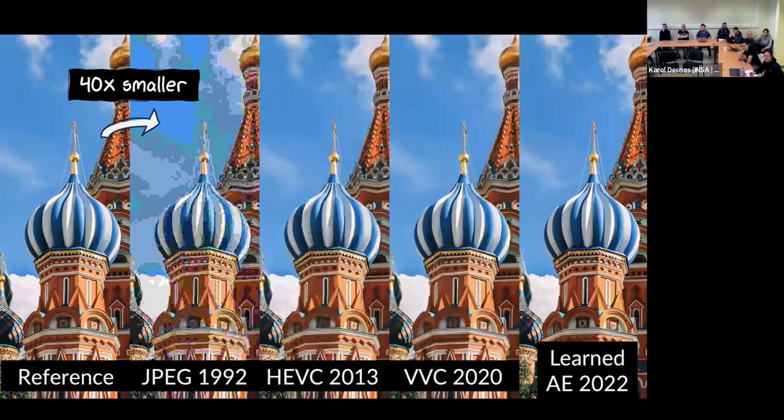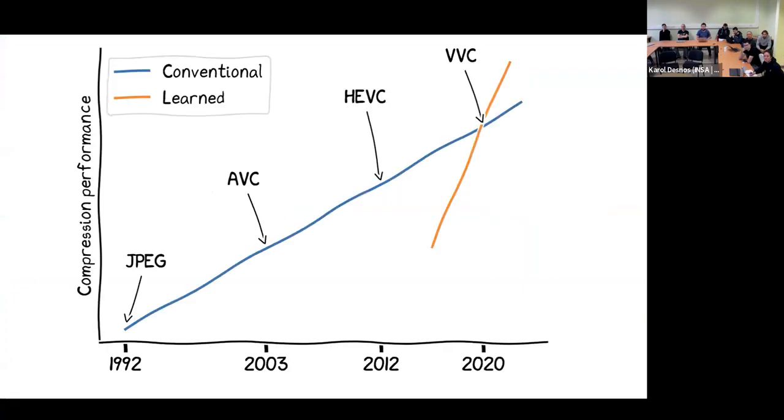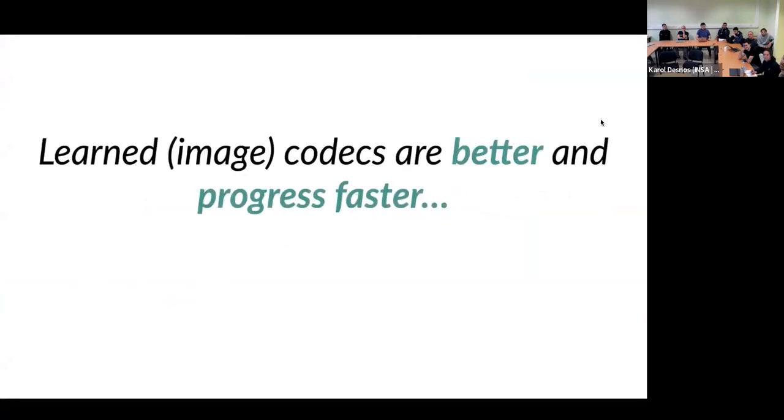So the conclusion of this illustration is that while the progress of conventional codecs are, let's say, slow and steady, so we need 30 years to go from JPEG to VVC, the progress of learned codecs are quite fast because it started in 2016 maybe. It needed a few years to achieve VVC-like performance and then it's now better than any other conventional codecs.